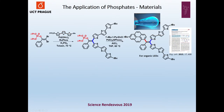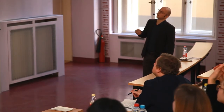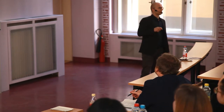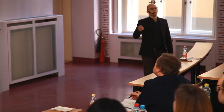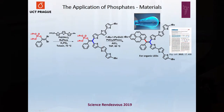Another application of phosphates starts from easily preparable dibromoenol phosphates. We are able to substitute the bromine atoms in the first cross-coupling reaction, and then use the substitution of the phosphate group for the preparation of molecules with extended pi-conjugated systems for the preparation of organic light-emitting diodes.